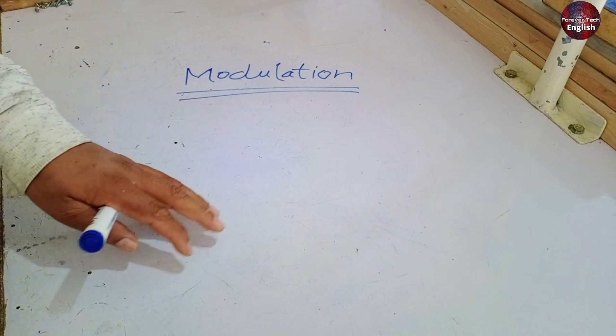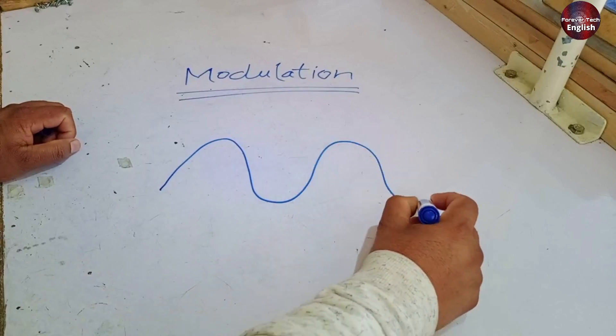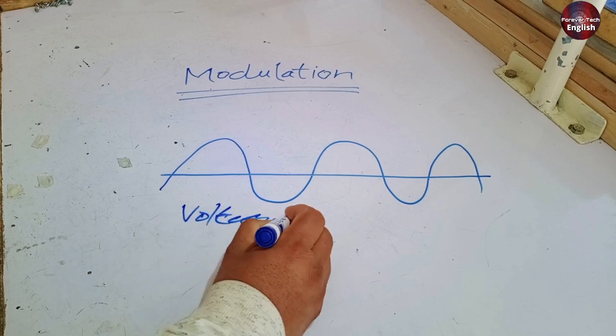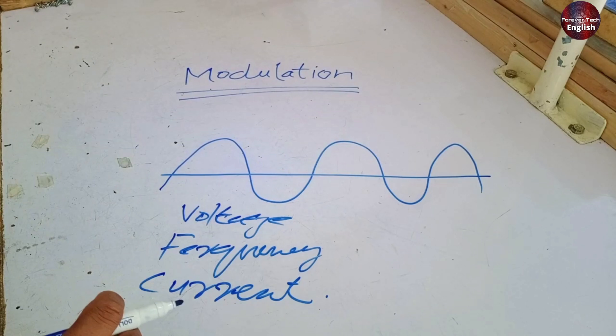But first, let me give you a brief idea of what modulation is. The electricity we have comes in the form of a sinusoidal wave, which carries voltage, frequency, and current. These three things travel together.